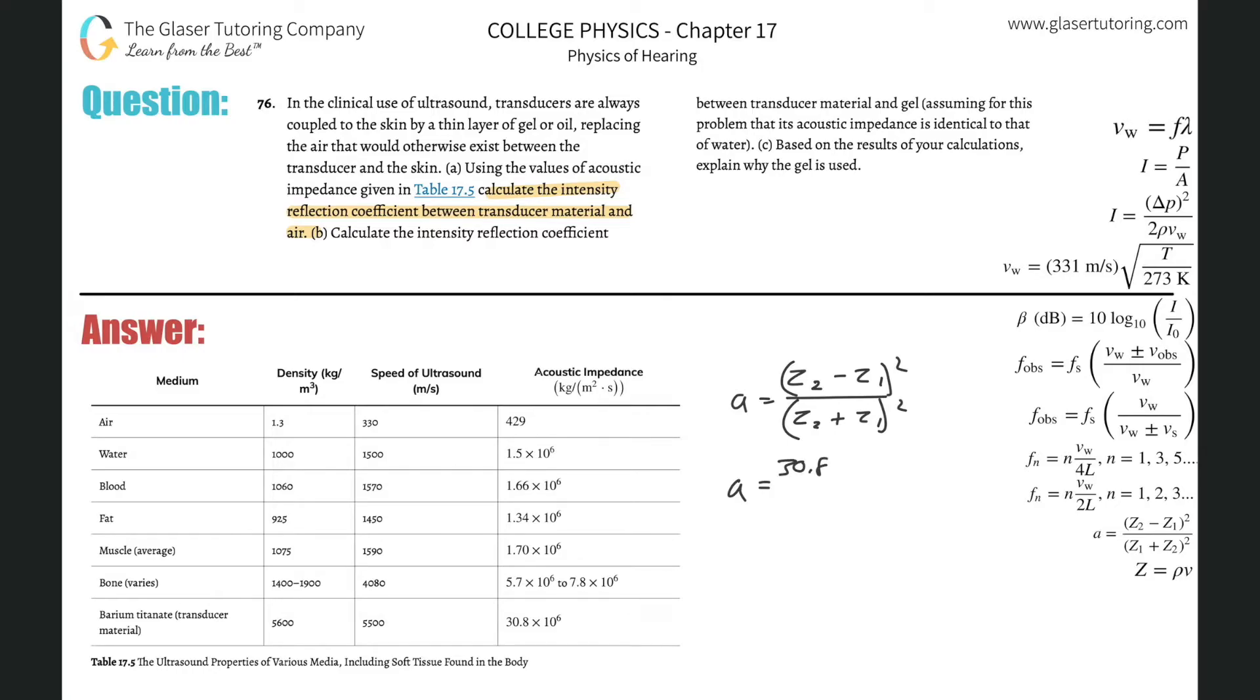So this is basically 30.8 times 10 to the sixth minus 429, all divided by 30.8 times 10 to the sixth plus 429, squared, and then this thing's squared, and then just simply calculate. So this is going to be 30.8 times 10 to the sixth minus 429, that's squared, and then divided by parentheses, 30.8 times 10 to the sixth plus 429, and that whole thing squared, and what do we get? About 0.9999, right? 0.9999.